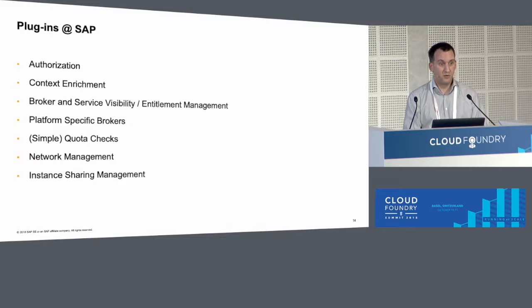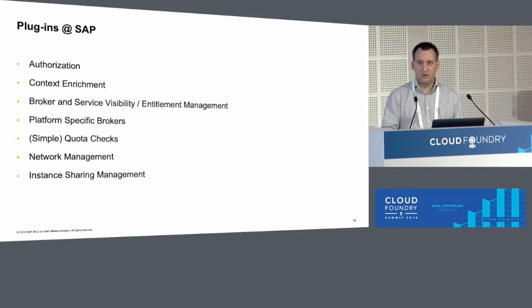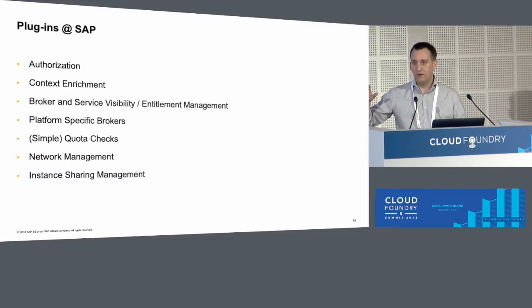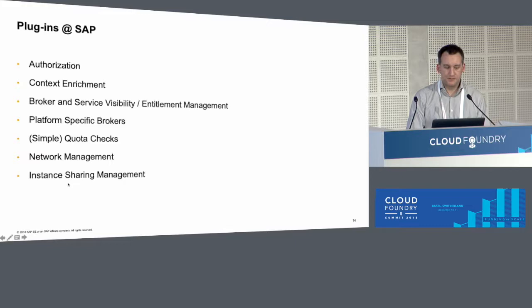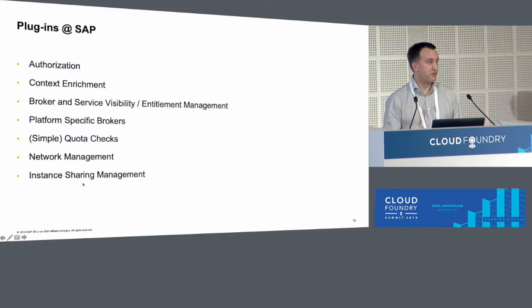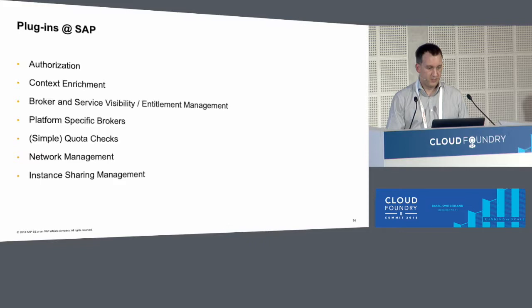Network management — this is probably a topic that needs another talk. We have services that are not reachable from the internet, so at the time of binding we have to create a tunnel between the application and the service. The service manager is the guy in the middle who knows both ends, and with a plugin we can actually create this tunnel, however that looks like — it might be different based on what the target is. And then we have the instance sharing plugin, which maps all the instance sharing policies I talked about into code.